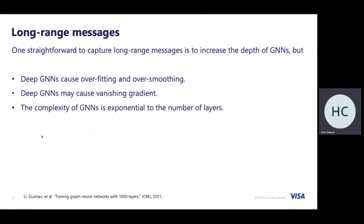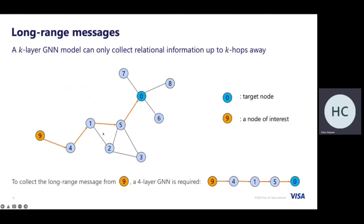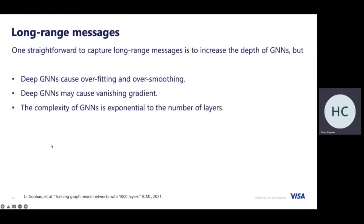One straightforward way to capture long-range dependencies is to increase the depth of GNN. However, deep GNN causes many issues. The first issue is that deep GNN causes overfitting and over-smoothing, as explained before. Deep GNN may also cause vanishing gradients, which makes it very hard to train.